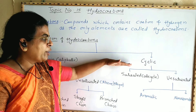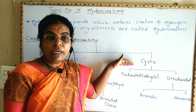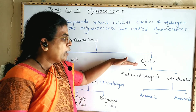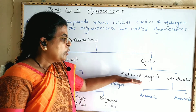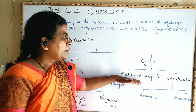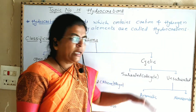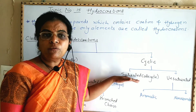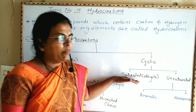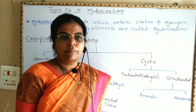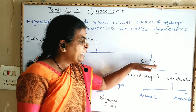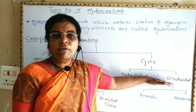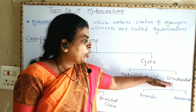The next class of hydrocarbons is cyclic or ring hydrocarbons. Cyclic hydrocarbons are further classified into saturated cyclic hydrocarbons and unsaturated cyclic hydrocarbons. In saturated cyclic hydrocarbons, the ring is formed by carbon-carbon single bonds; they are also named as alicyclic compounds. In cyclic unsaturated hydrocarbons, there is presence of one or more carbon-carbon double bonds in the molecule.